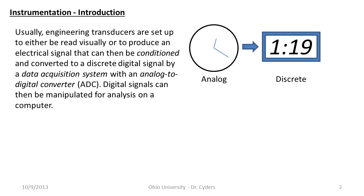Sometimes we need to take readings over a really long time span — say, every ten seconds for five days around the clock. We don't want to pay an engineer to sit there and do that, so we can automate by collecting data digitally. Usually what we do is either put a visual display, or where humans really shouldn't be collecting the data, we convert the signal to an electrical signal that is read in by an analog-to-digital converter, or ADC, through a data acquisition system. Then we can manipulate that data on a computer.